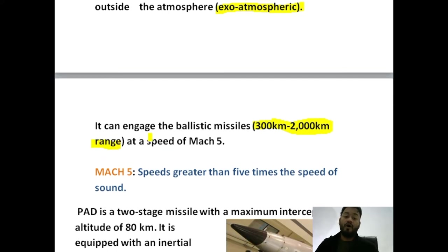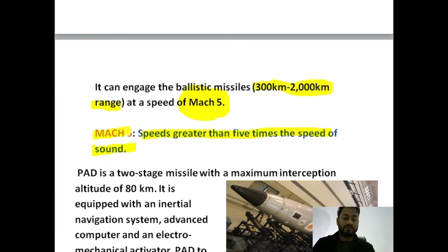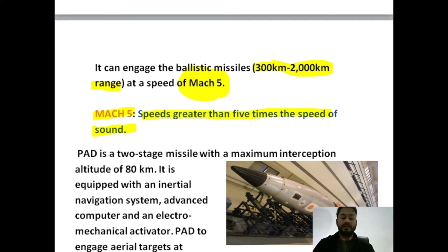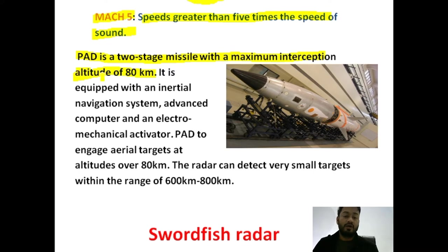Mach 5 means the speed is greater than 5 times the speed of sound. You have also seen that in BrahMos and other missiles we have Mach 3 and Mach 4, meaning 3 or 4 times greater than the speed of sound. Prithvi is a two-stage missile with a maximum intercept altitude of 80 kilometers. In the first stage it is propelled by solid fuel, and thereafter by liquid fuel. It is a liquid-fuel propellant.